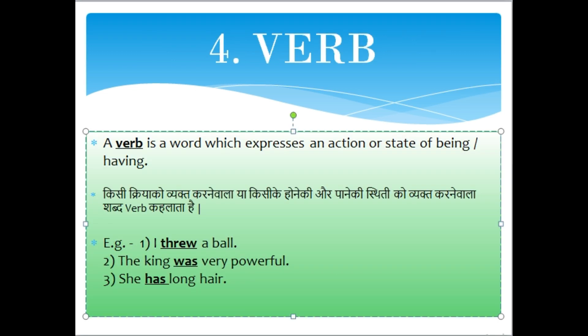Now let us see what a verb is. A verb is a word which expresses an action or state of being or having. For example: I threw a ball. The king was very powerful. She has long hair. In these sentences, threw, was, and has are verbs. 'Threw' क्रिया दर्शाता है. 'Was' powerful होने की स्थिती को दर्शाता है. 'Has' long hair पाने की स्थिती को दर्शाता है. इसलिए ये तीनों शब्द verb हैं.